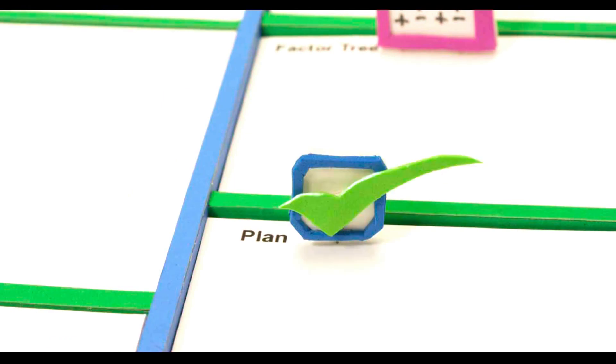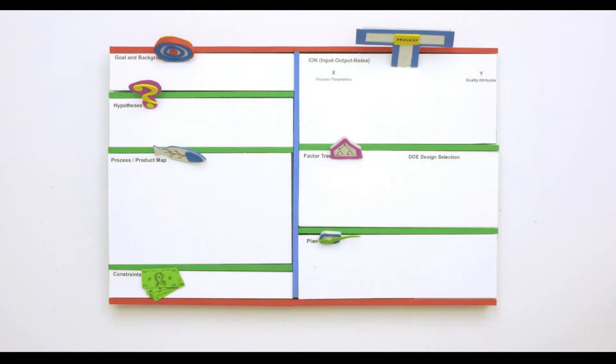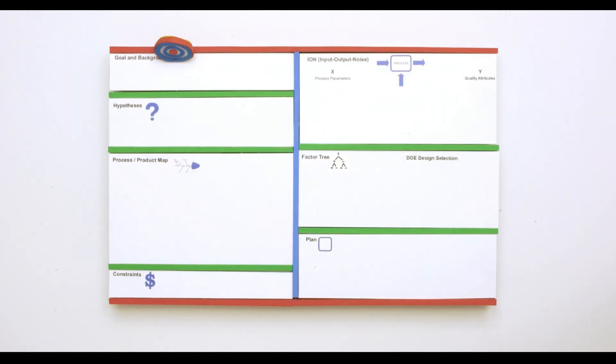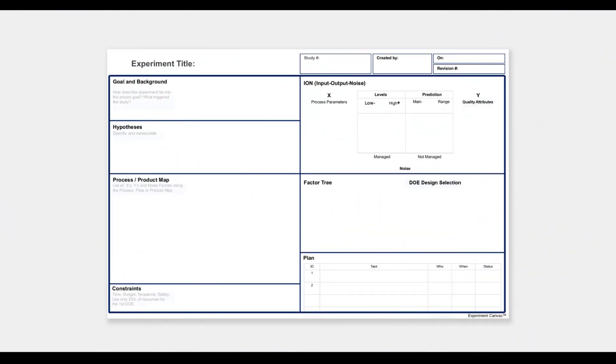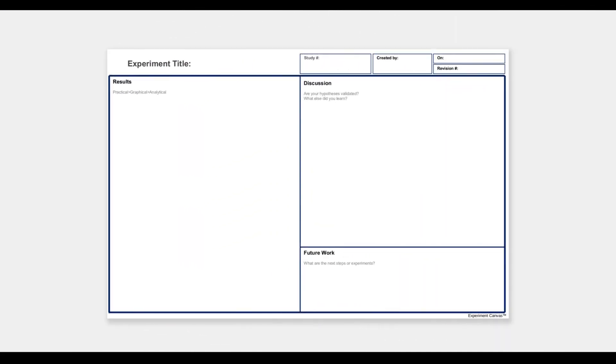This section shows what the next steps are, done by whom, and by when. So with the Experiment Canvas, you can map out your entire experiment on a piece of paper. This works well for any scientist or engineers in any industry.